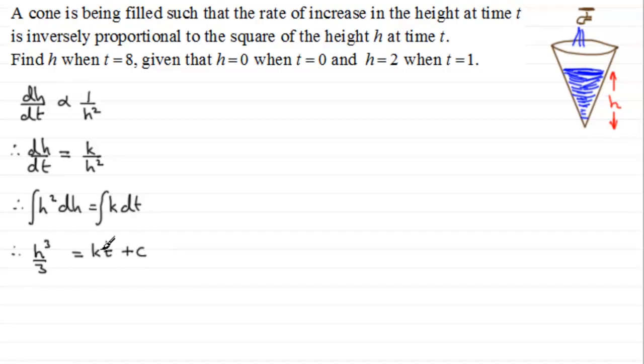Now we've got to work out what these two constants are, k and c. We can do this with our boundary conditions. So if we start with the first one, that is when t equals 0, we can see that h equals 0.